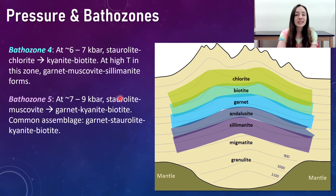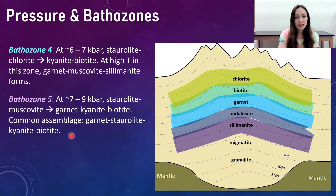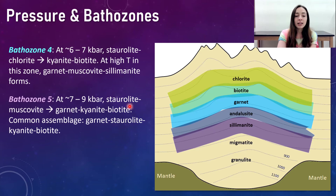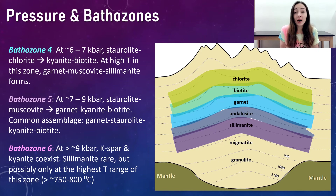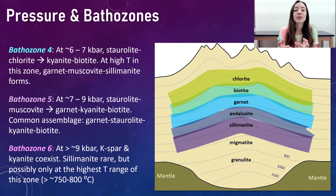In Barrow zone five, from around 7 to 9 kilobars, staurolite and muscovite transition to garnet, kyanite, and biotite. The common assemblage in this zone is garnet, staurolite, kyanite, and biotite — staurolite can obviously coexist with garnet, kyanite, and biotite. In Barrow zone six, the highest pressure zone over around 9 kilobars, K-spar and kyanite coexist. Sillimanite is rare, but possible only at the highest temperature range of this zone, around 750 to 800 degrees Celsius.